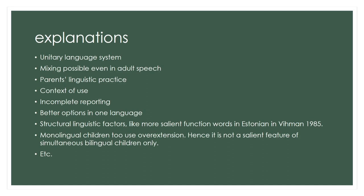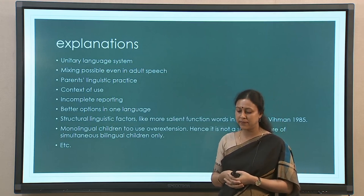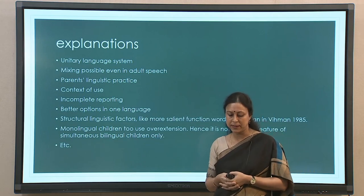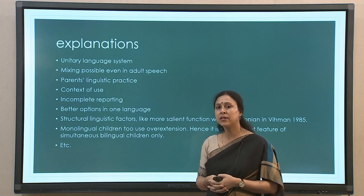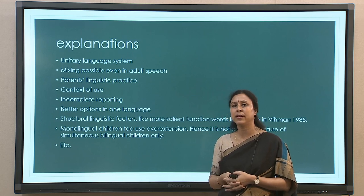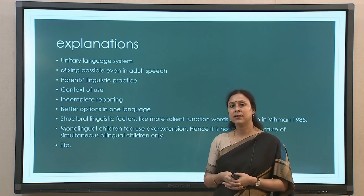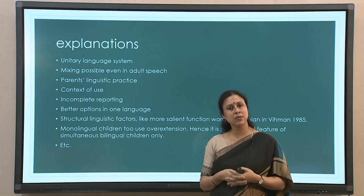Another example from Vihman (1985) is that of structural factors in a language. In her study on an Estonian-English bilingual child, she refers to structural linguistic factors like function words. She says that English function words were easier than Estonian, and hence the child was probably using them more in Estonian contexts — a lot of mixing of English into Estonian and not the other way around. Salience is an important factor here. Last but not least, even monolingual children use a lot of over-extension of one word: when they have fewer words in their vocabulary, they use the same word in many different contexts, making various permutations and combinations. So this kind of mixing is not something only typical of simultaneous bilingual children but also found among monolinguals.